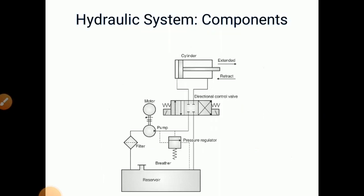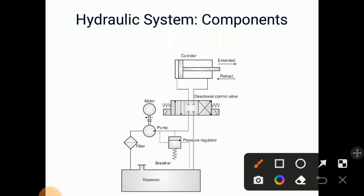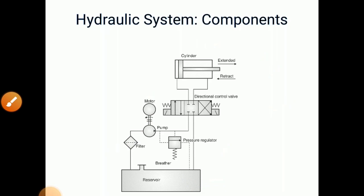So hydraulic system components consist of many components like cylinder, direction control valve to control this moment, motor pumps, filter for filtering, reservoir is used for reservoiring the oil, and pressure regulator for regulating the pressure. So according to this direction control valve, the piston inside the cylinder can be extended or retracted. Operation is started from turning motor on.